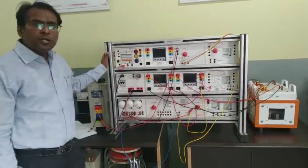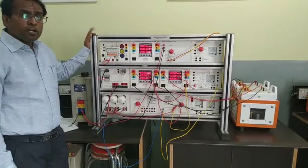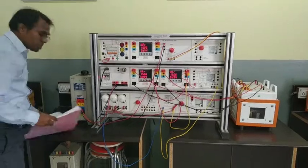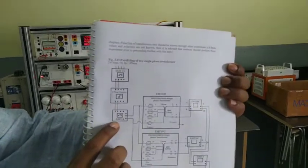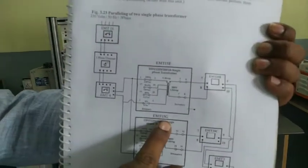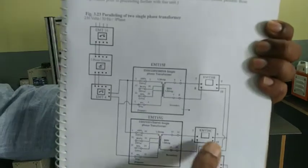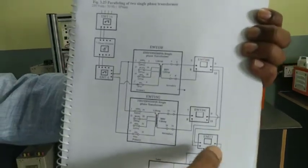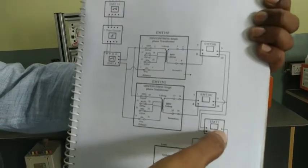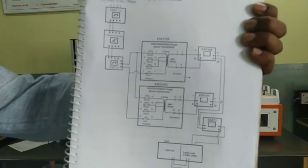Again we are using the same panel — the transformer parallel kit. First, see the block diagram. We are using EMT-16, then a three phase DEMASTAT EMT-4, then two transformers: EMT-15F as the first transformer and EMT-15G as the second transformer. For measuring voltage and current, we use EMT-20B meter and EMT-20C meter. We are also adding an EMT-3 plus load on the load side. This is the block diagram for paralleling two single phase transformers.